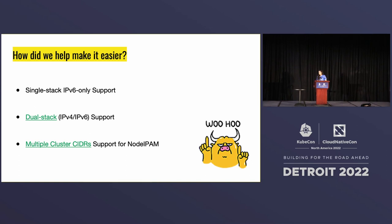Most recently, we have introduced dual-stack IPv4 and IPv6 support for Kubernetes clusters. This helps the story of migrating to v6-only, ensures you can reach v4-only services still, and makes sure your application is ready to move in that direction. We've also introduced multiple cluster CIDRs support for Node IPAM. What that means is you no longer need one large contiguous block for your pod CIDRs. You can add discontinuous blocks and continue to grow as your workloads grow on your cluster.